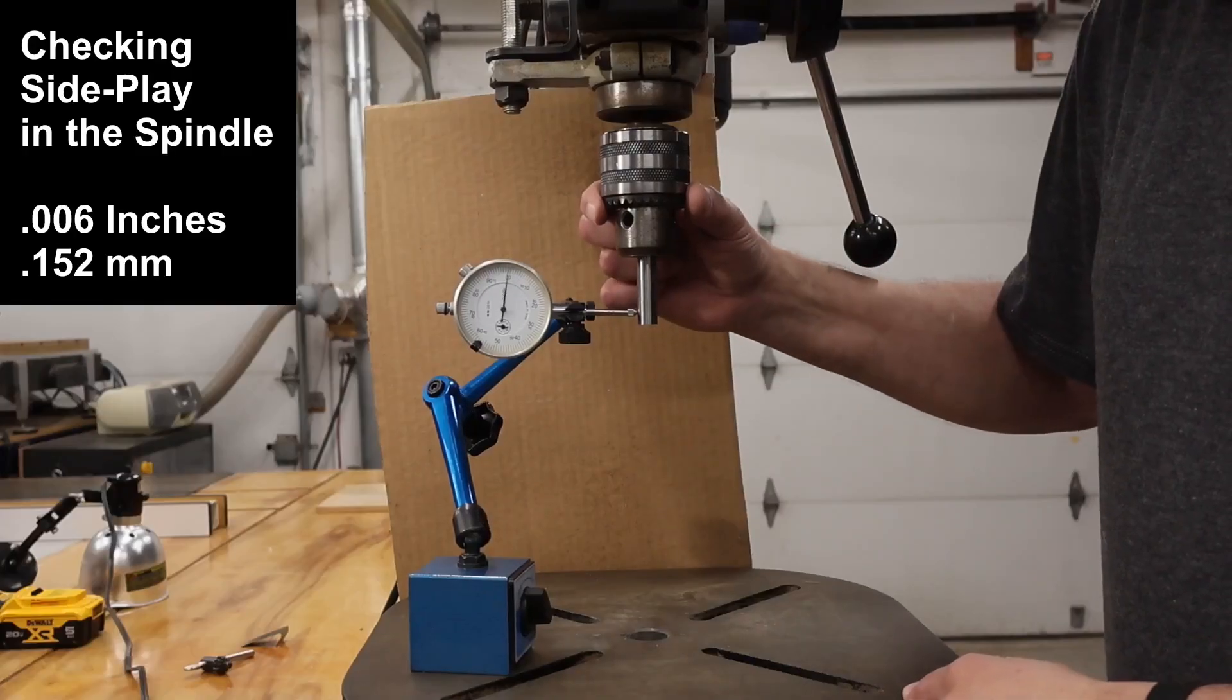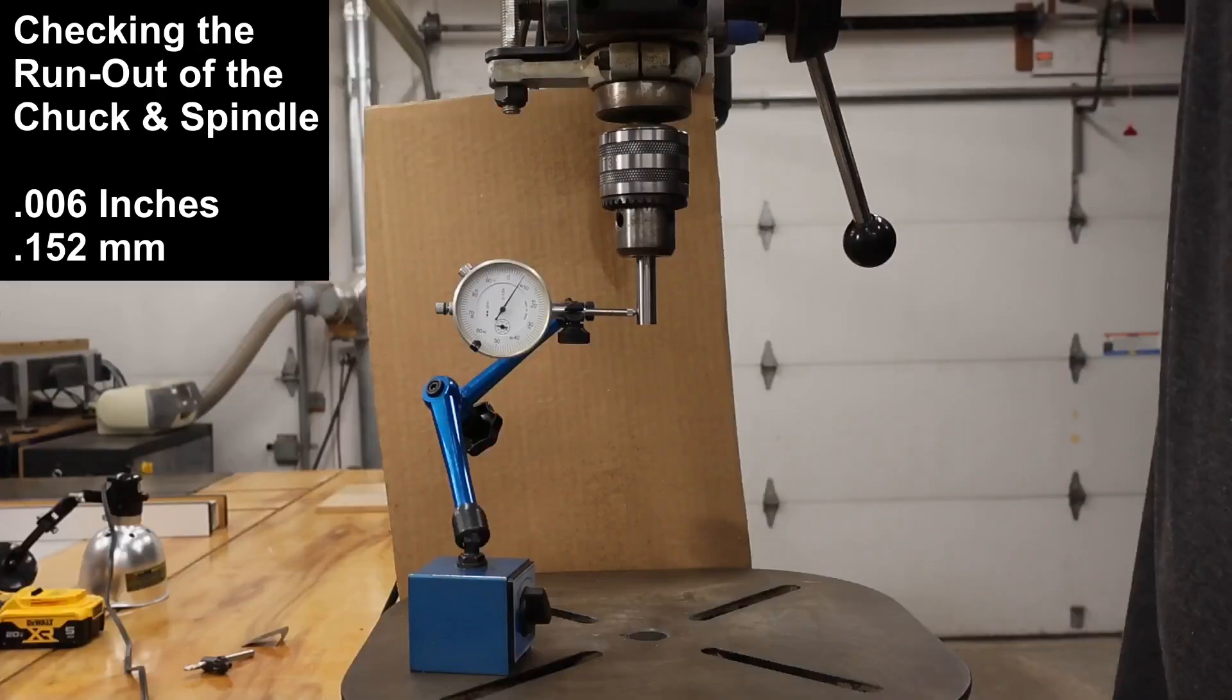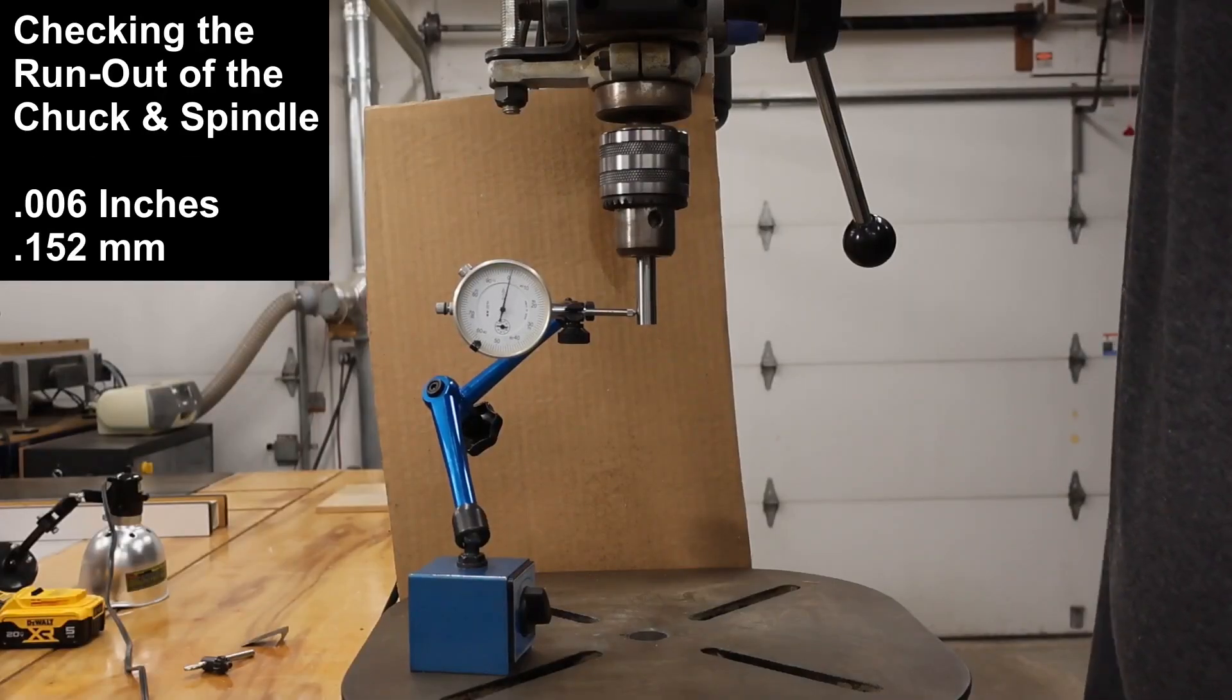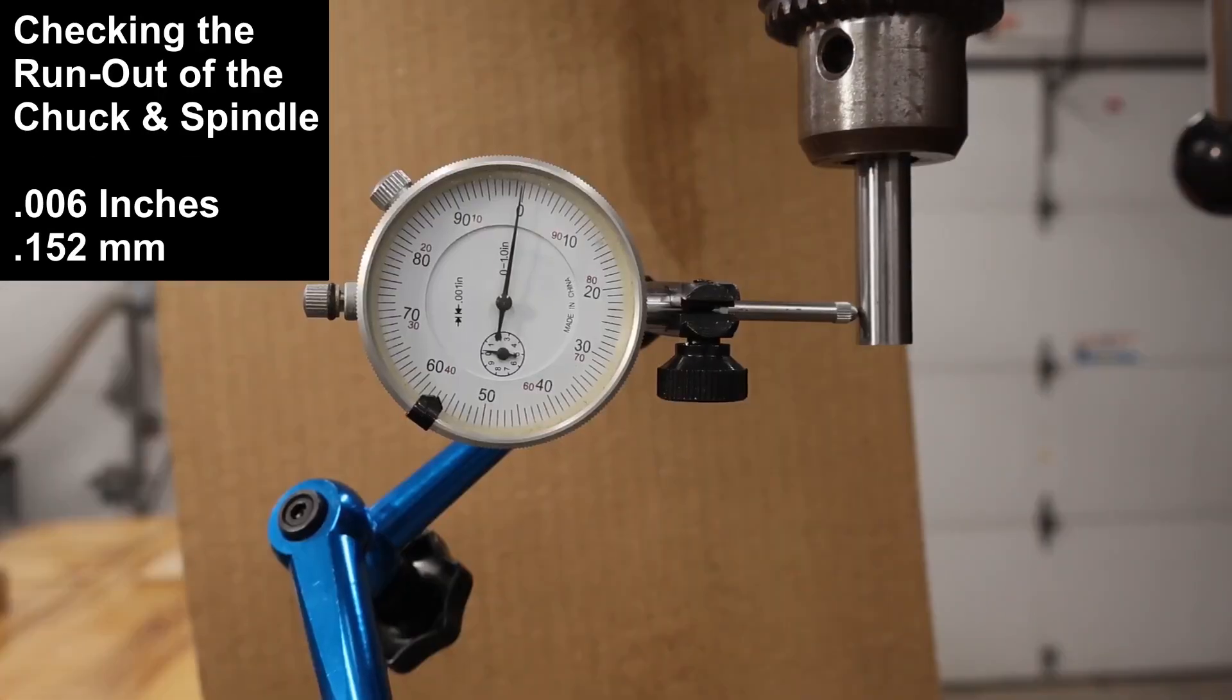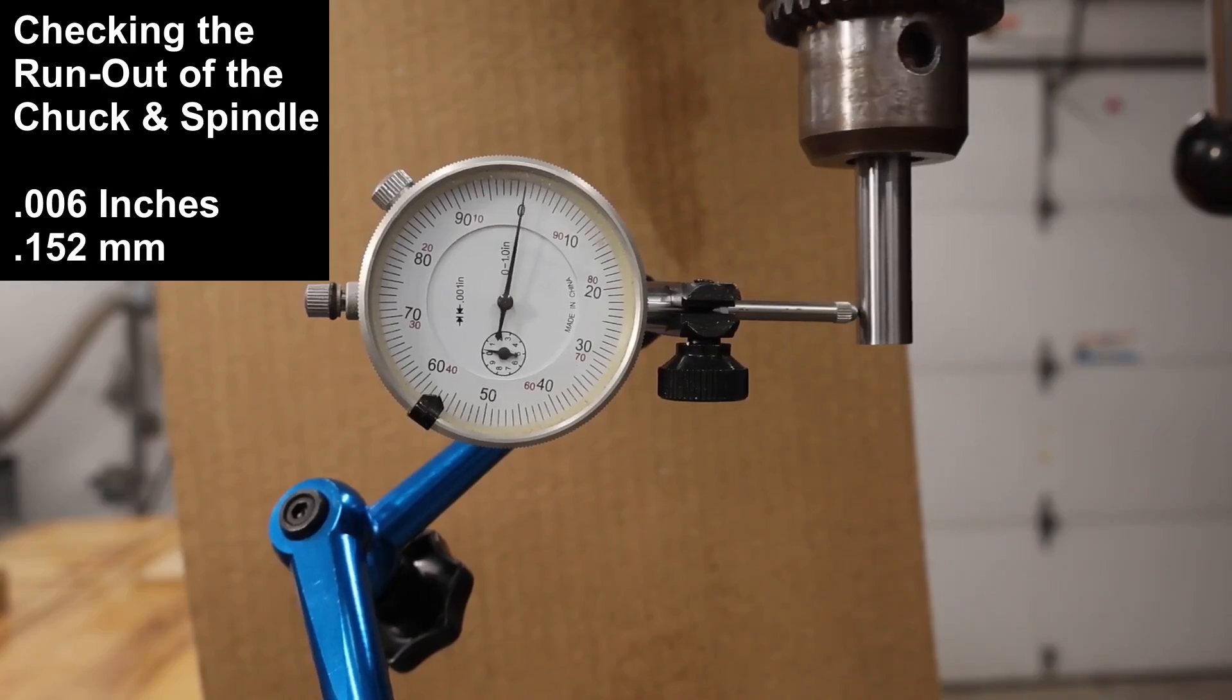In this demonstration, I'm showing you the slop in my drill press's quill, how much movement it has side to side, and then we'll measure how much runout is in the chuck that is on this particular drill press. In both cases, those are not really impressive numbers.